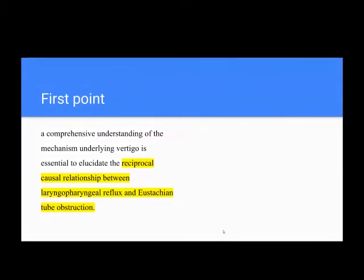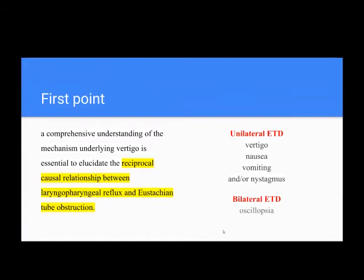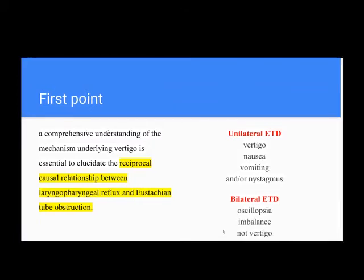Unilateral ETD can cause unilateral peripheral vestibular loss — vertigo with nausea, vomiting, and endolymphatic changes. Bilateral ETD can cause oscillopsia and imbalance, but not vertigo.